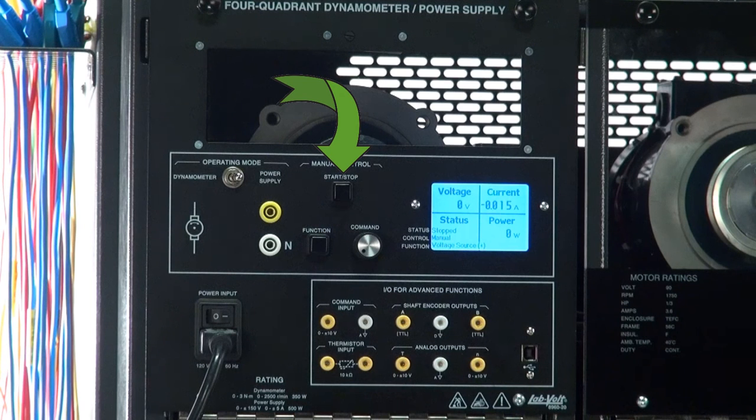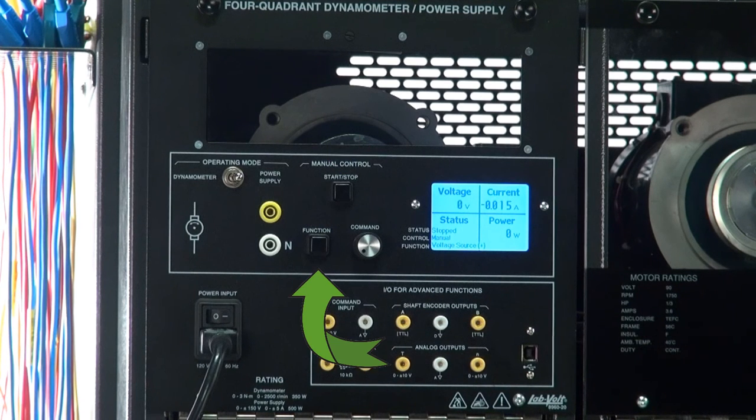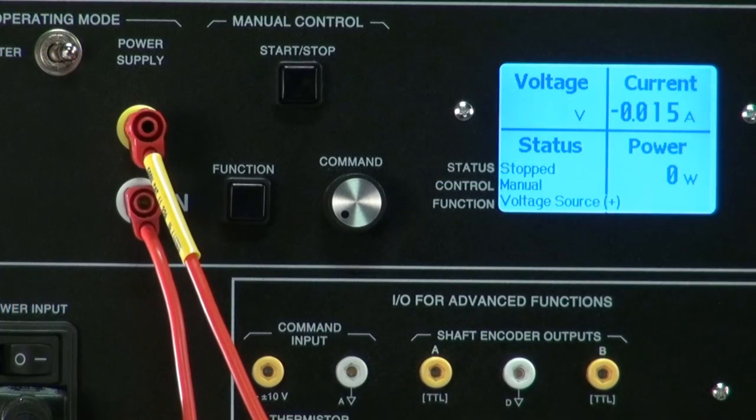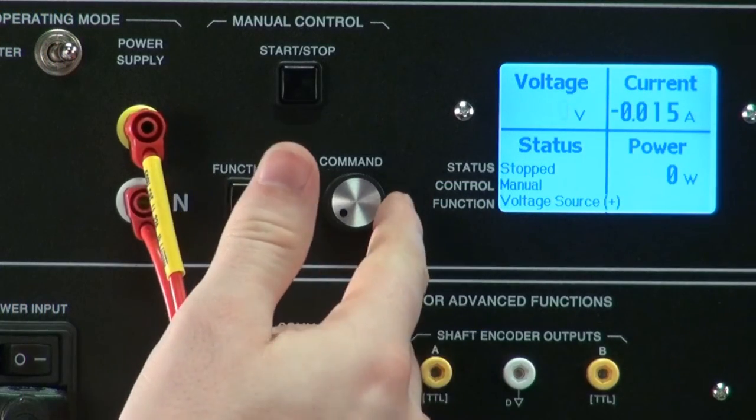The start-stop button here controls the function status. The function button allows you to cycle through each function. And finally, the knob here is used to change the command, which can be voltage or current. From there, let's cycle through each function to see what we get.